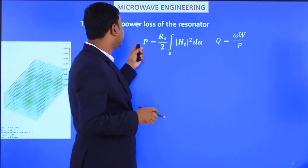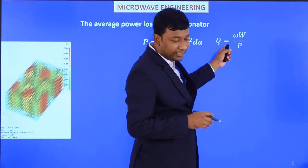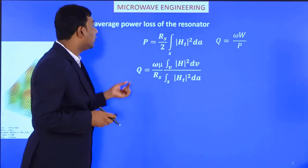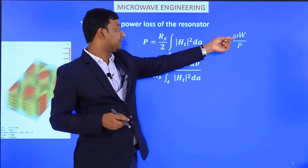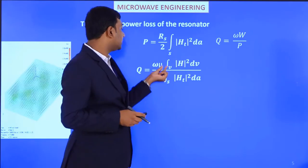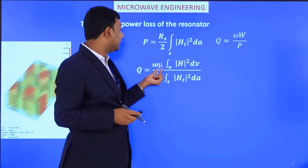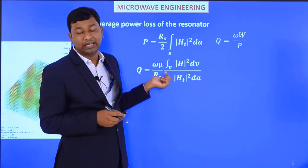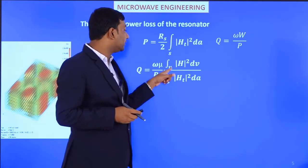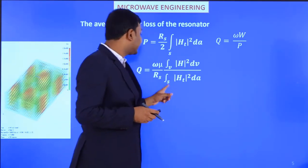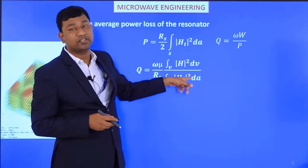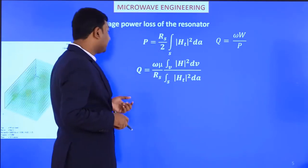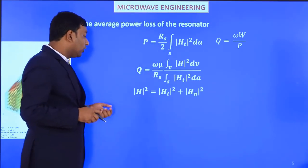If we place the values of W and P into the Q equation, we get Q equals ω·μ divided by... Here the factor of 2 from numerator and denominator cancel, giving us the volume integral of H squared over the surface integral of H_t squared dA. That is the quality factor equation.